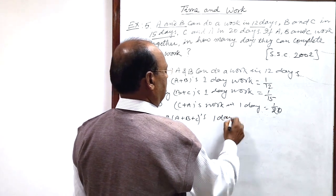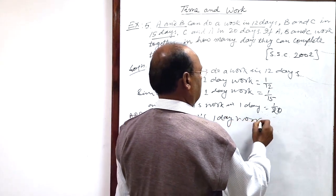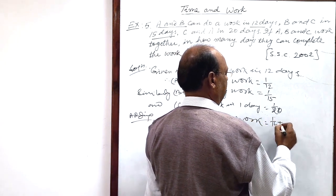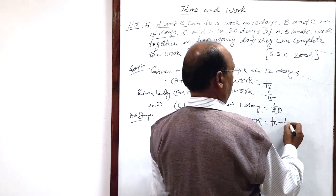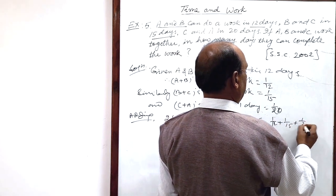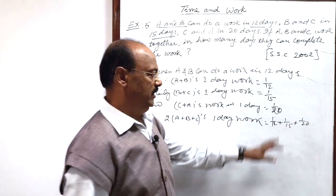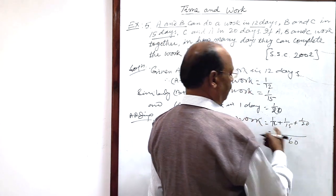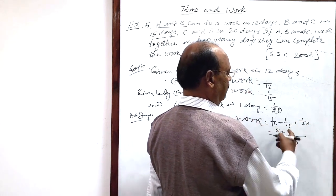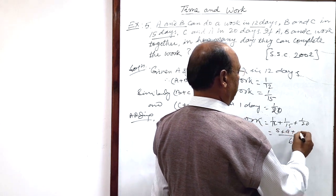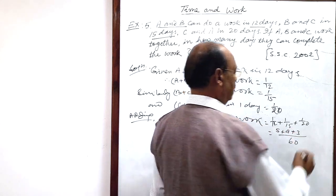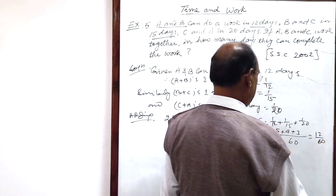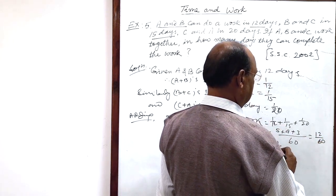This is equal to 1 by 12 plus 1 by 15 plus 1 by 20. Let us simplify it. LCM will be 60. This is equal to 12 by 60, which is equal to 1 by 5.